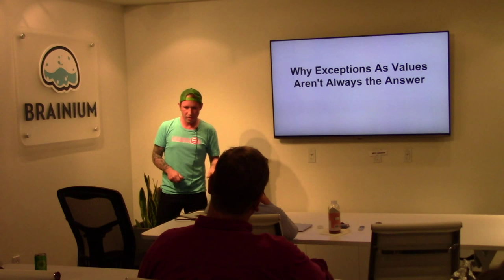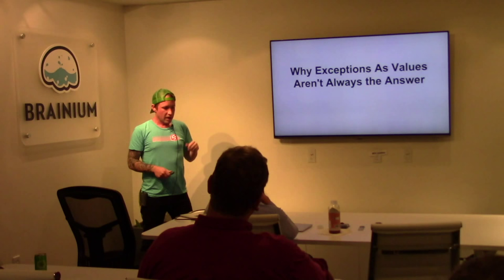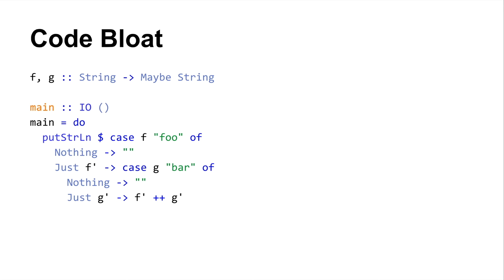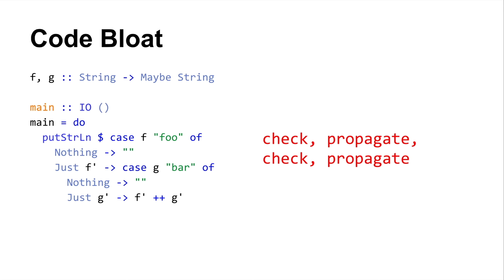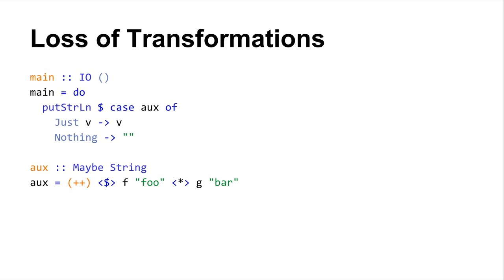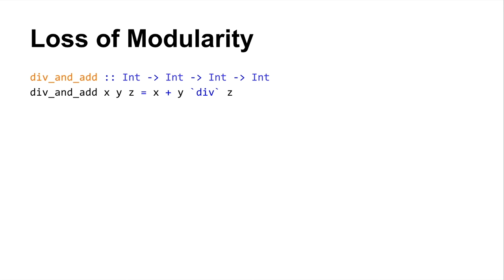I was digging into the papers that ultimately resulted in the incarnation of exceptions we see today in the language, and they provided some justifications for why exceptions as values isn't always the way to go. One thing they mention is code bloat. If you've got two functions f and g from String to Maybe String and want to combine their inner values using string concatenation, you have to do error propagation checks repeatedly. You can use the Monad instance for Maybe to reduce boilerplate, but then you've imposed sequencing when the operations are actually independent. You can also use Applicative, but writing this code all the time makes life kind of sad, especially for someone new to the language.